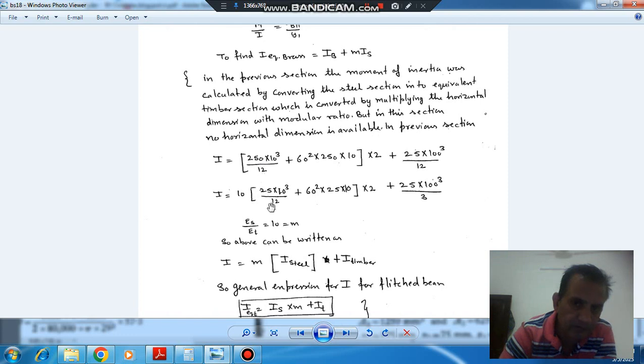If we take the flange part and take m as common, okay, for this, then it will be 25 times t³ by 12 plus b², 25 into m, okay. And this is your flange part.